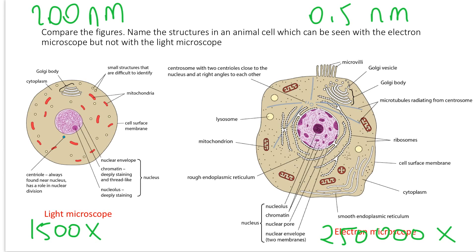The nucleus is the largest organelle, so it's definitely seen with the light microscope, but the nuclear envelope double membrane cannot be seen. Chloroplasts in plant cells, mitochondria, and centrioles can be seen, but pay attention: centrioles cannot be seen as a pair, and the double membranes of chloroplasts and mitochondria also cannot be seen with the light microscope.